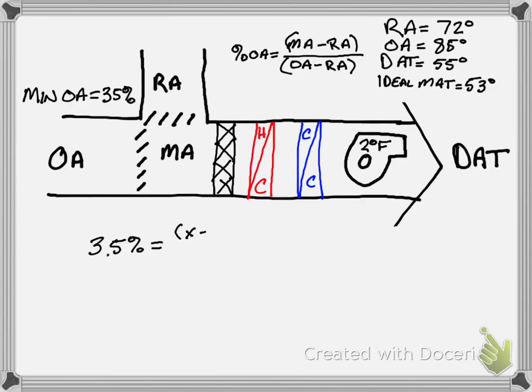We know our return air temperature is 72, we know our outside air is 85, and our return air temperature is 72. So we have to solve for X.